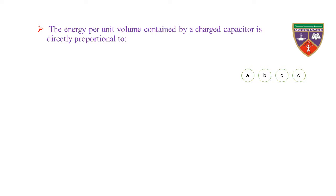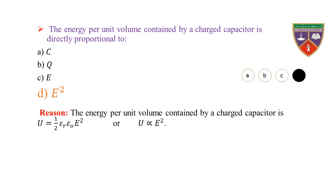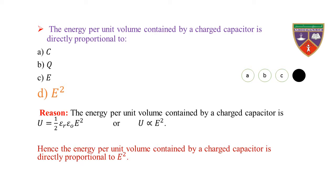The energy stored per unit volume contained by a charged capacitor is directly proportional to — option A: C, option B: Q, option C: E, option D: E². The key is E²; the correct option is D. Reason: The energy per unit volume is U = ½ε₀εᵣE², so U is proportional to E². Hence, the energy per unit volume is directly proportional to E².